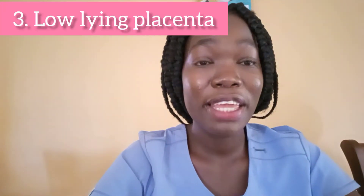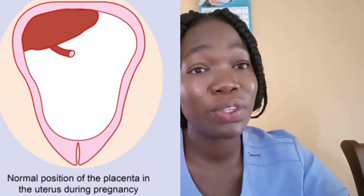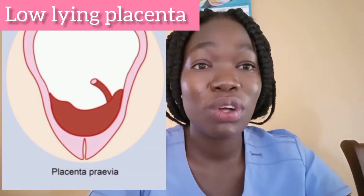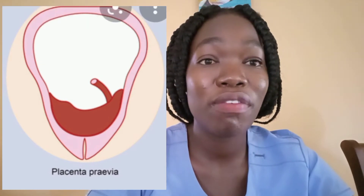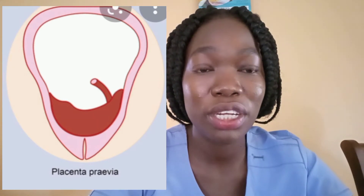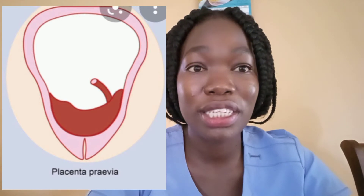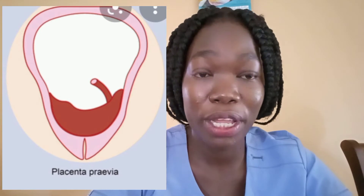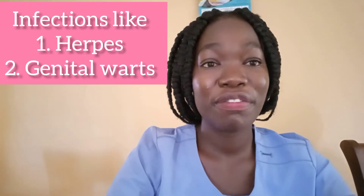Another indication is low-lying placenta, also known as placenta previa. Normally the placenta is situated on the upper side of the uterus, but in this case the placenta is down near the cervix. If you go into labor with a low-lying placenta, you have a risk of placental detachment causing massive bleeding, because the uterus contracting may cause the placenta to detach before the baby is born.